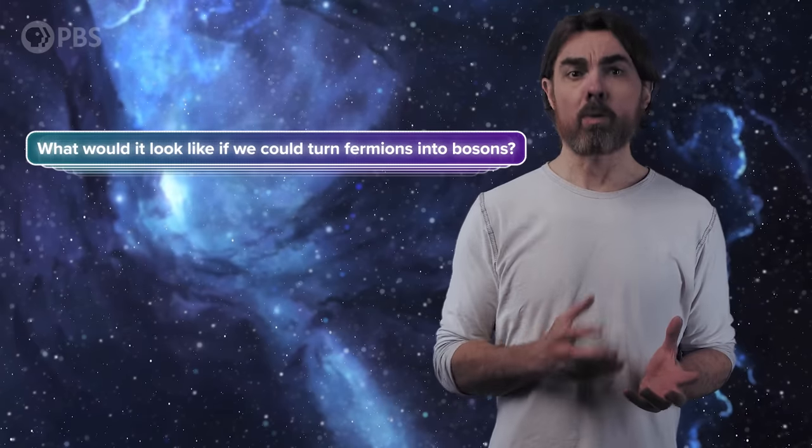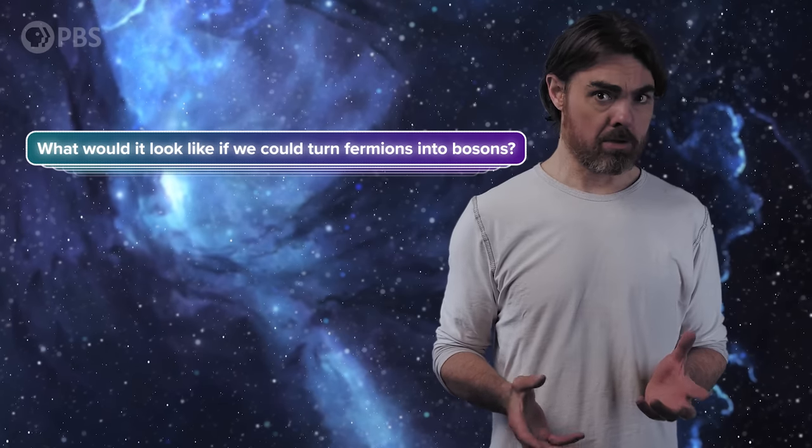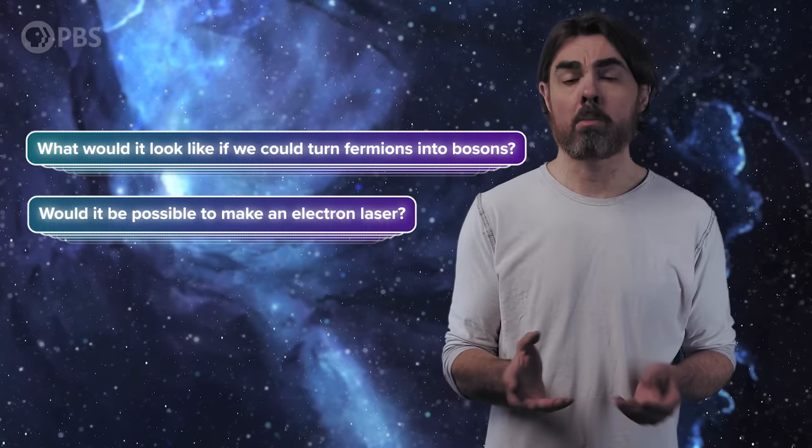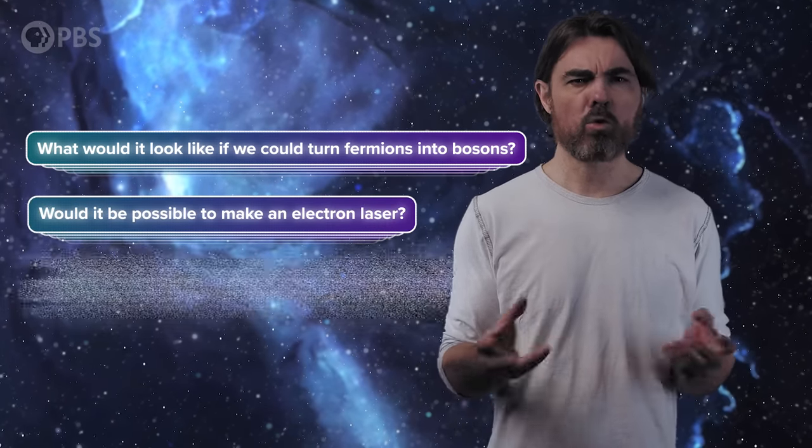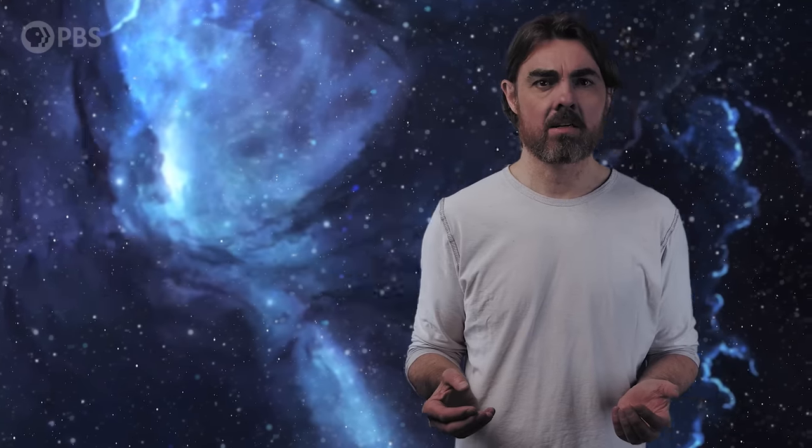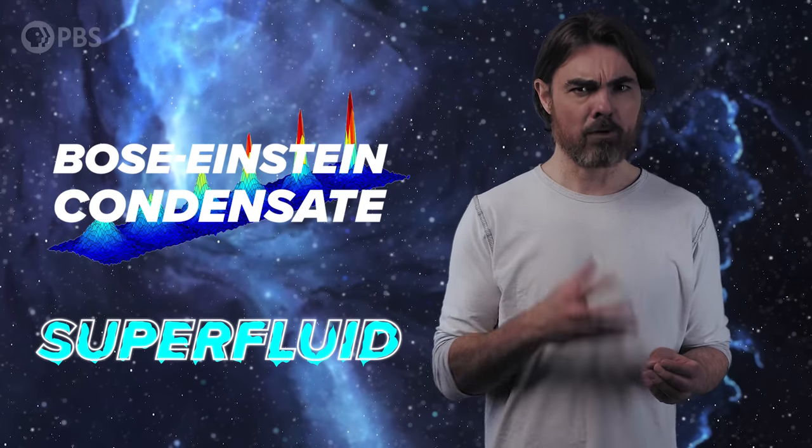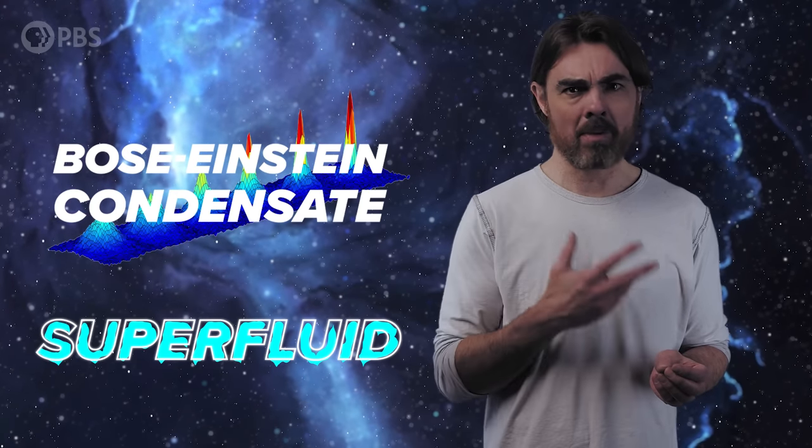So what would it look like if we could turn fermions into bosons? Would it then be possible to make an electron laser? Or could we make atoms that collapse into superdense states? Well, actually, we can turn some fermions into bosons, and one possible result is the Bose-Einstein condensate and this superfluid thing that I've been teasing for the past several minutes.